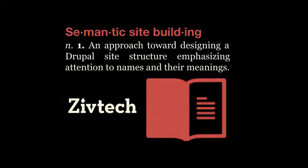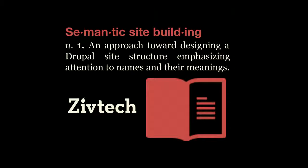Where I'm coming from with this idea of semantic site building is I really find that the biggest problem in a lot of the Drupal sites that I see is the way that the content model is architected. People didn't put enough thought into how they named things and how they were consistent with the way things were named. It makes things very difficult to use and kind of ruins a lot of Drupal sites. People need to put a little bit more thought into how they're working with Drupal on the site building level in order to make a good CMS.